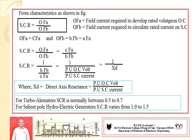For turbo alternators, the SCR value varies from 0.5 to 0.7. For salient pole hydroelectric generators, the SCR value varies from 1 to 1.5.